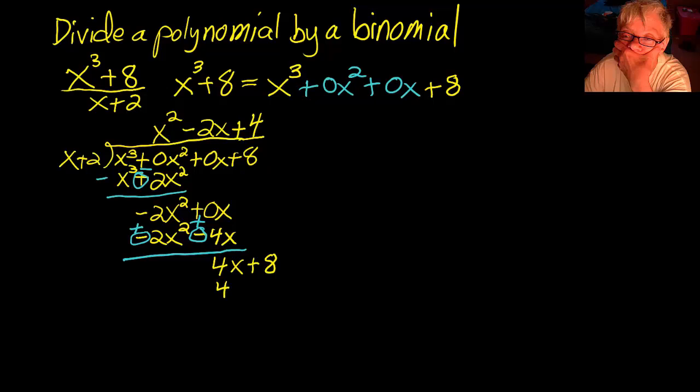Compare the first terms. x times 4 is 4x, and 4 times 2 is 8. Draw the line. Change your signs. And your remainder is going to be 0.